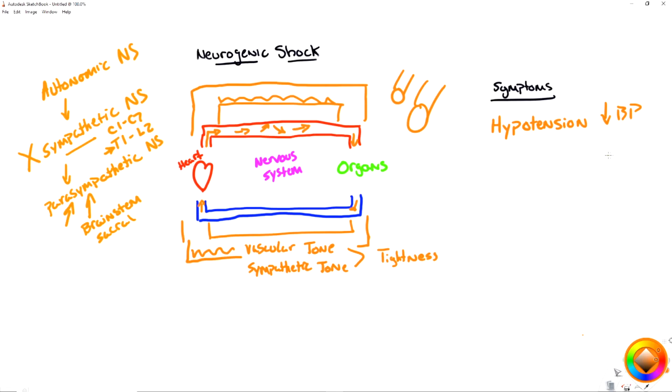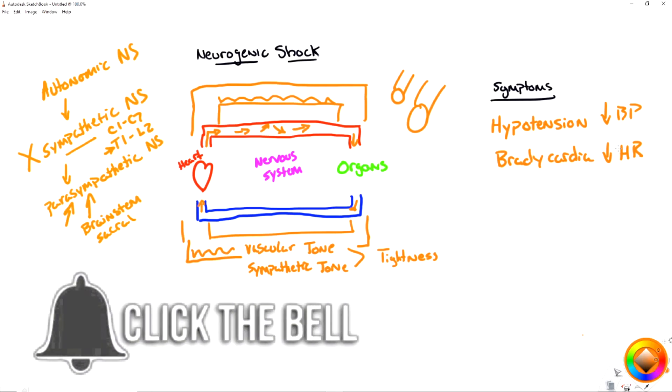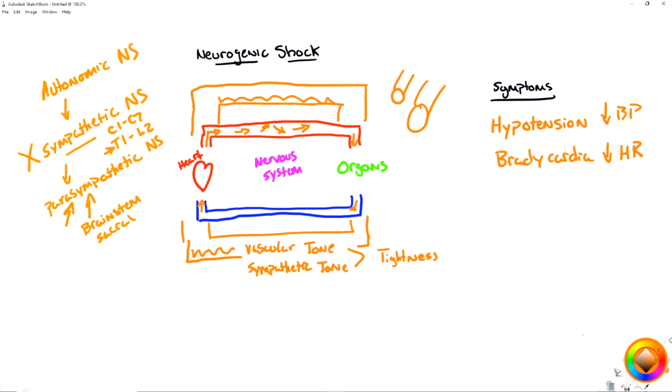So instead of the heart speeding up the heart rate, like it should, you're going to get a heart rate decrease. And you're going to get bradycardia. And that heart rate decrease is now going to make the hypotension worse because you're not moving as much blood as you should. So as heart rate decreases, blood pressure is also going to decrease. You can see why this becomes a whirlwind downwards.